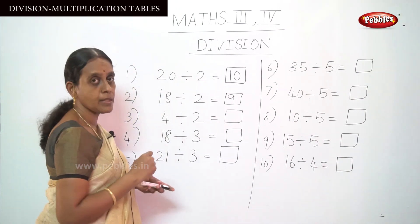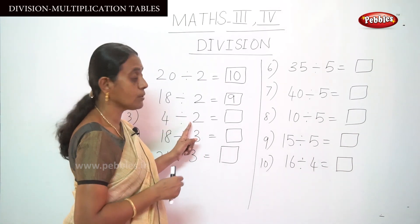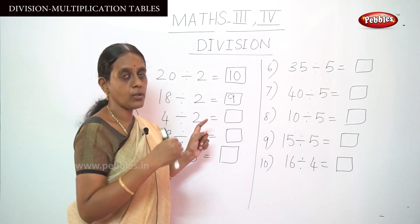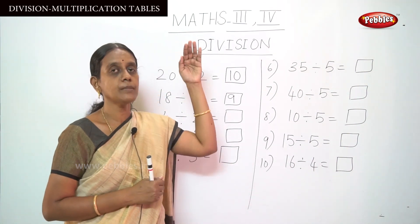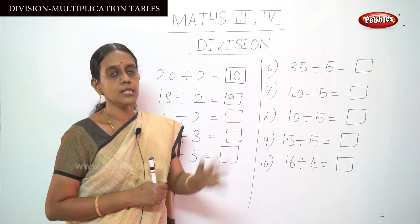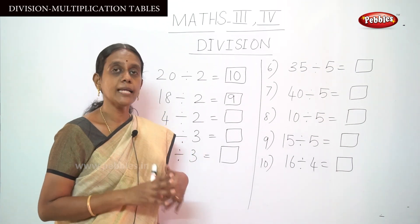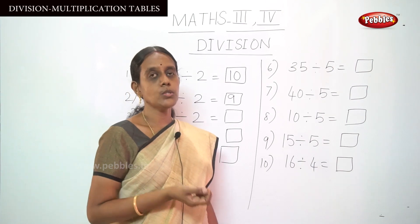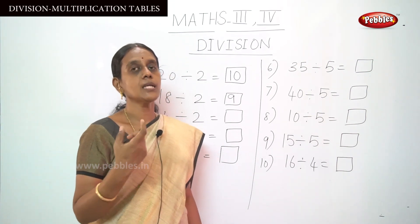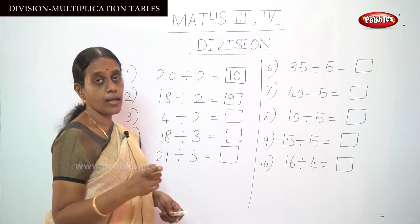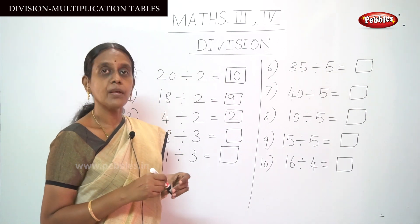Move on to the next sum: 4 divided by 2. You have to say the 2 table from number 1. Remember one thing, children — while you are saying the multiplication table, you will start from 0. That is, 0 2's are 0, because any number multiplied by 0 gives 0. So: 0 2's are 0, 1 2 is 2, and 2 2's are 4. So here you put 2. The answer is 2.